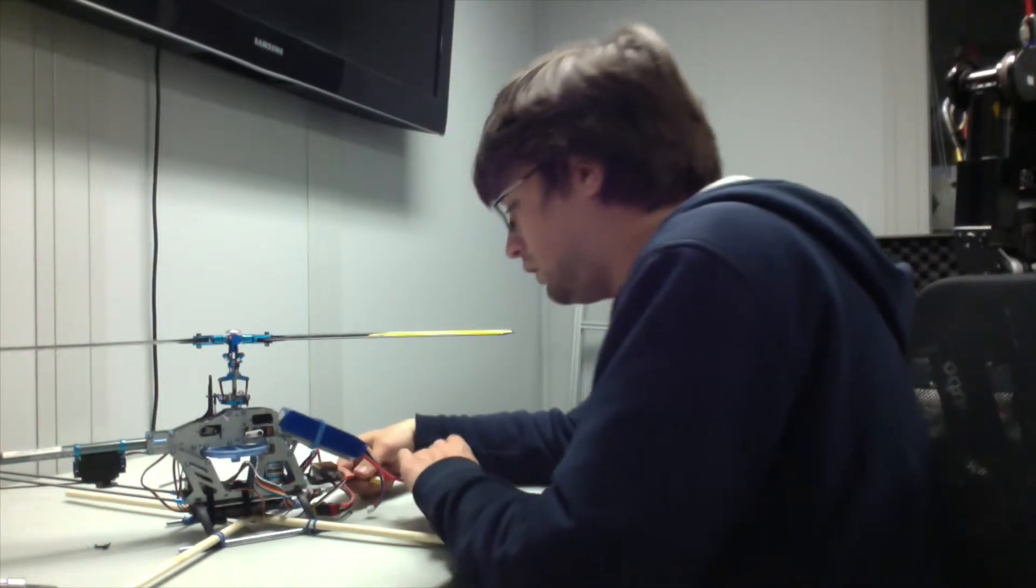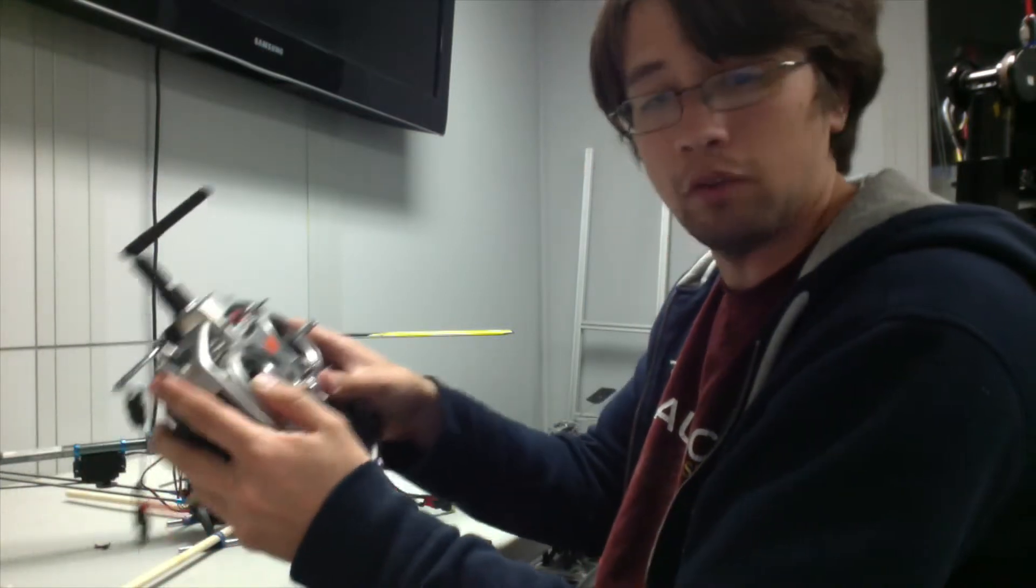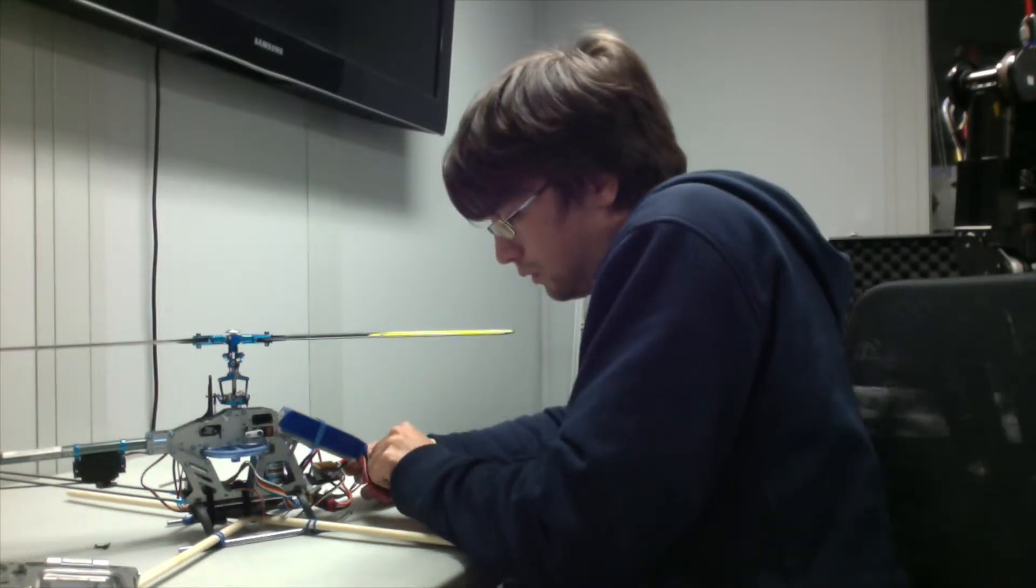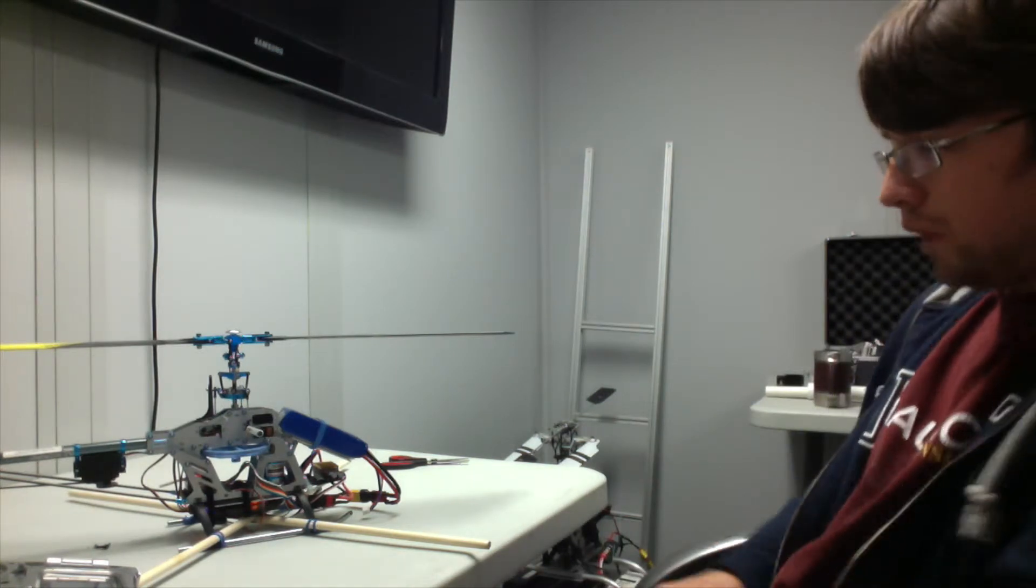The next thing we need to do is actually turn it on. Make sure that your throttle is all the way down. Make sure your receiver's on before you plug it in. We will turn it on, plug it in, let it go through its startup sequence. It will sit there and it will calibrate.